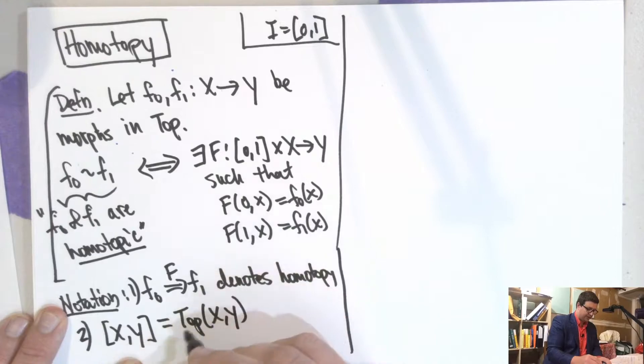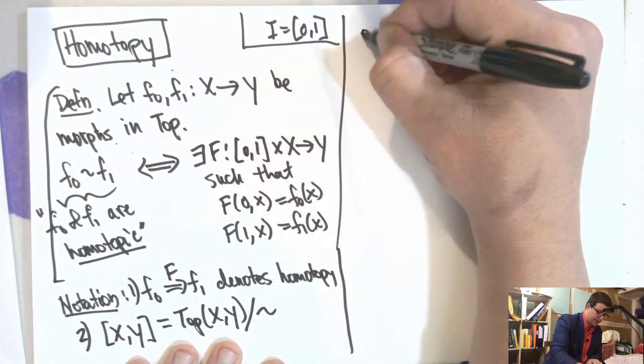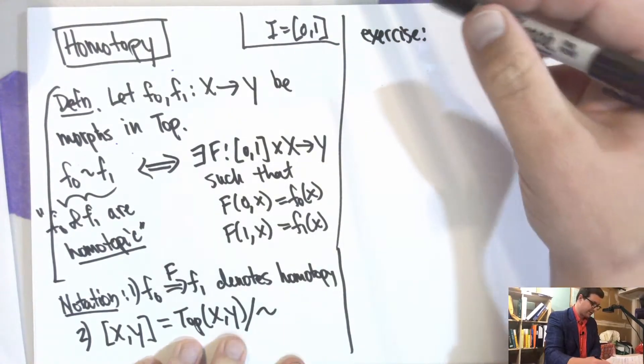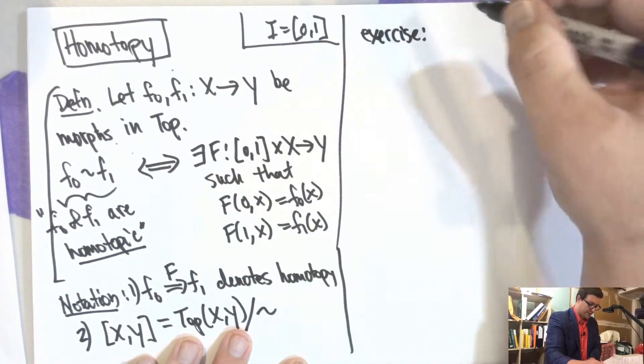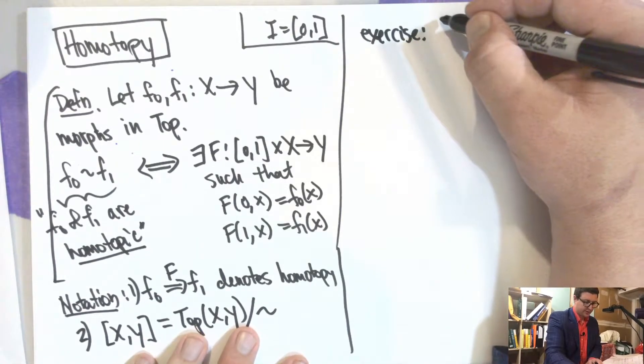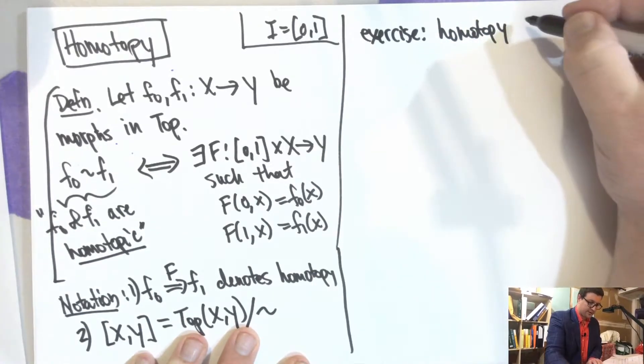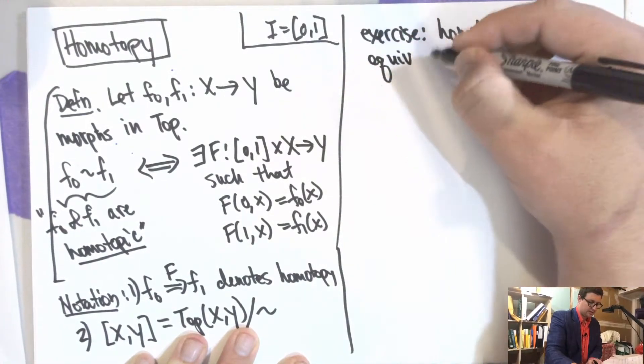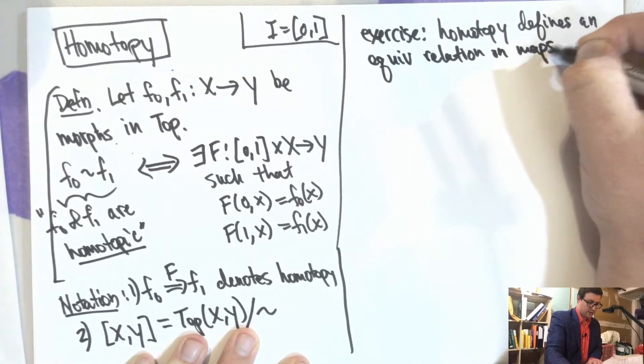This is the set of continuous maps, and we can consider the modulo homotopy. There's kind of a good exercise. I do pretty much the whole thing. So that this thing here, the homotopy is an equivalence relation. So this defines an equivalence relation on maps.